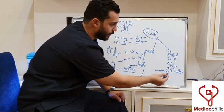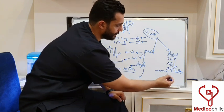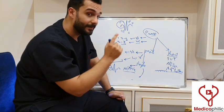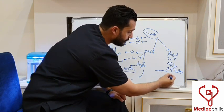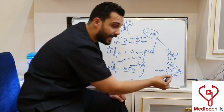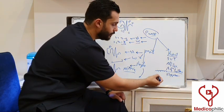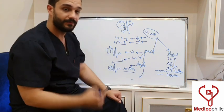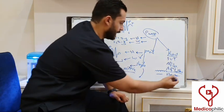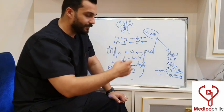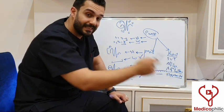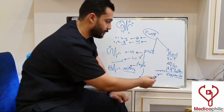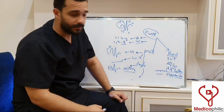Another cause for absence of the P wave is electrolyte disturbance, specifically hyperkalemia. Hyperkalemia may cause flattening of the P wave, so you won't see a P wave in the ECG. Hyperkalemia first influences the T wave, but in more advanced cases there will be flattening or absence of the P wave.